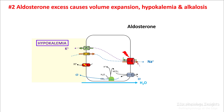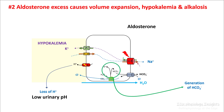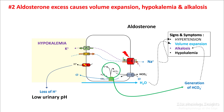Potassium loss leads to hypokalemia. Aldosterone also stimulates hydrogen ATPase, so there is release of hydrogen ion in the urine and generation of bicarbonate ion. So aldosterone excess results in improving blood pressure, volume expansion, alkalosis, and hypokalemia.